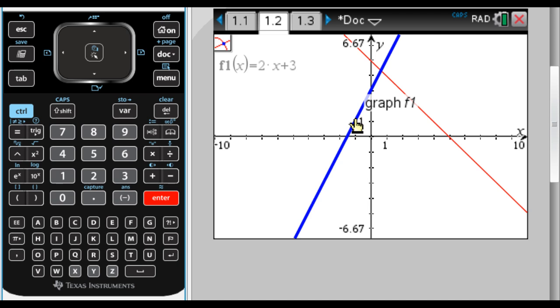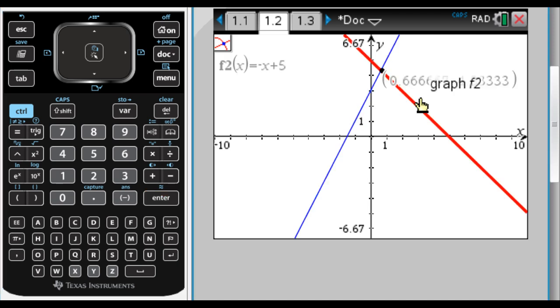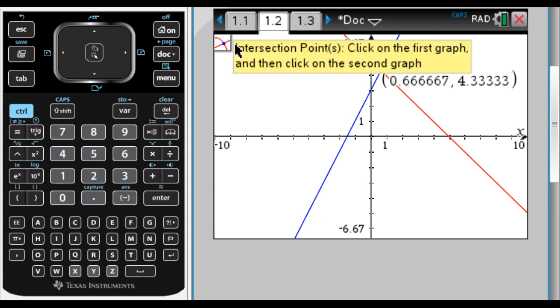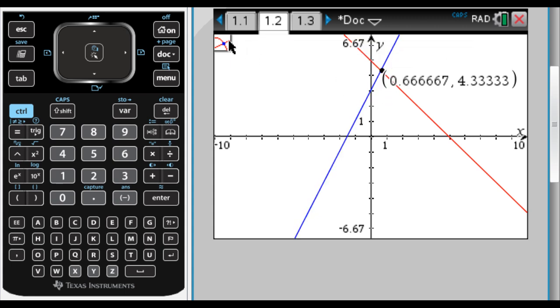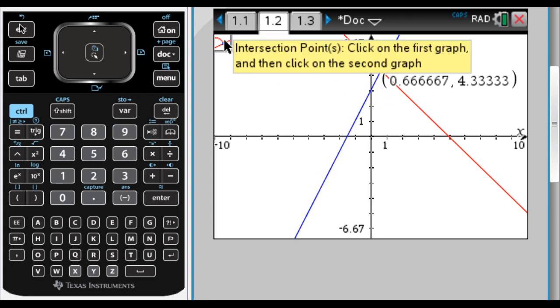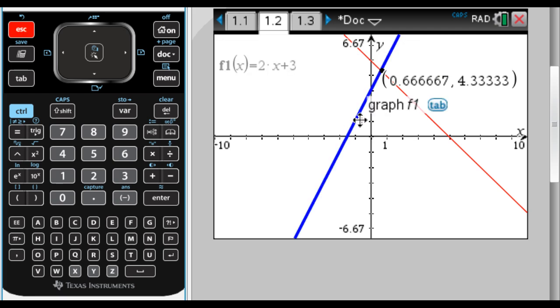And now all you do is click on the two graphs. So here's one graph, and here's the other graph. And I get the intersection point. As long as this thing is up here, you're going to keep trying to find intersection points. So once you're done, go over here and press escape on the keyboard. And we're out of there.